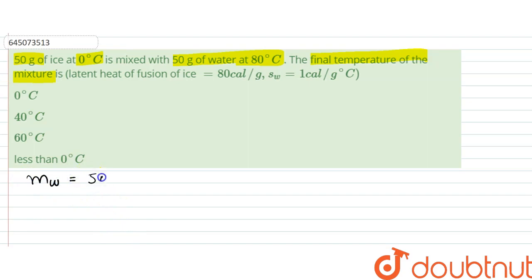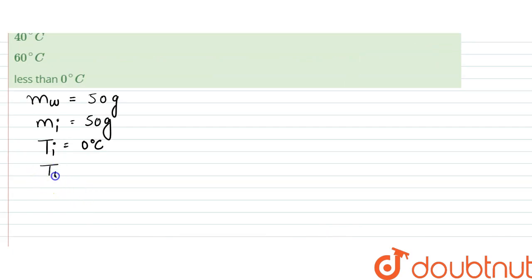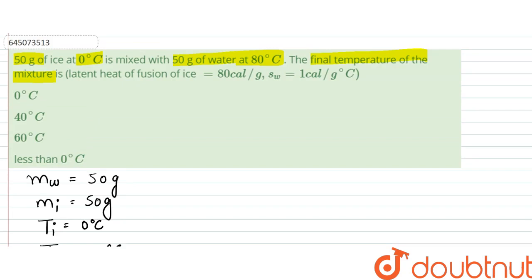Mass of water is 50 grams, mass of ice is also 50 grams, temperature of ice is 0 degrees Celsius, and temperature of water is given as 80 degrees Celsius. That is what we are given. And latent heat of fusion is given.